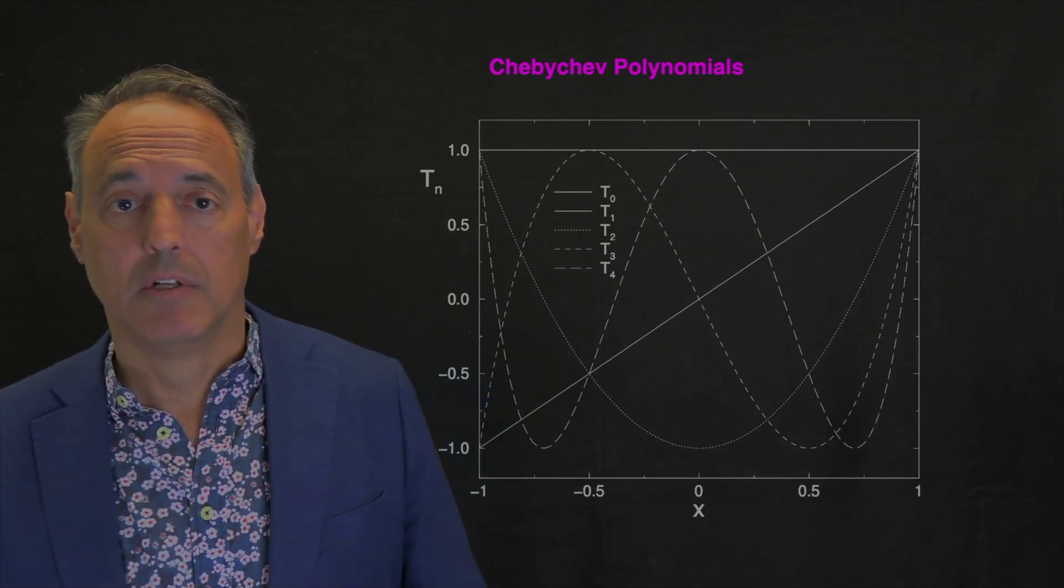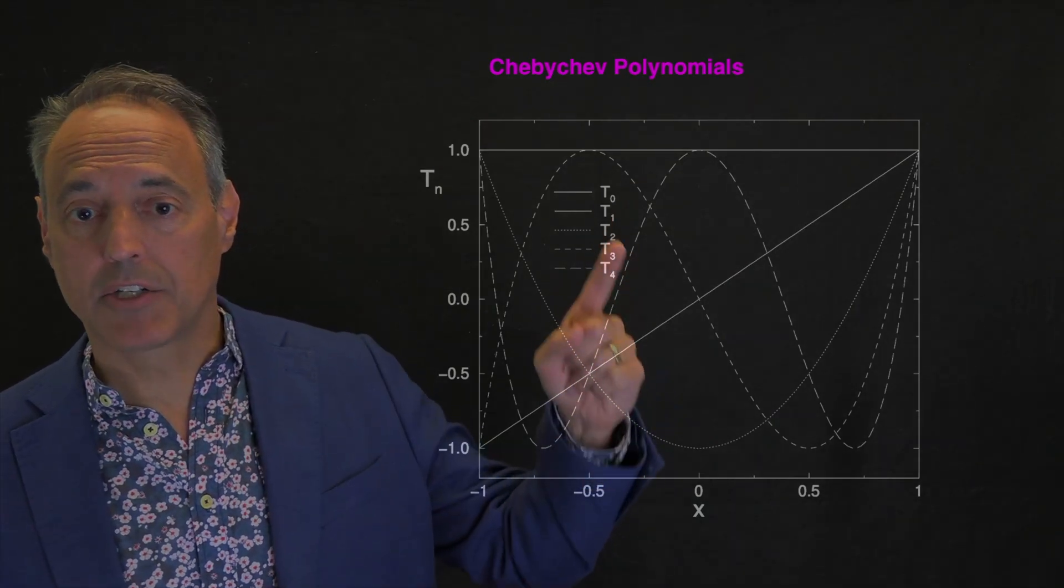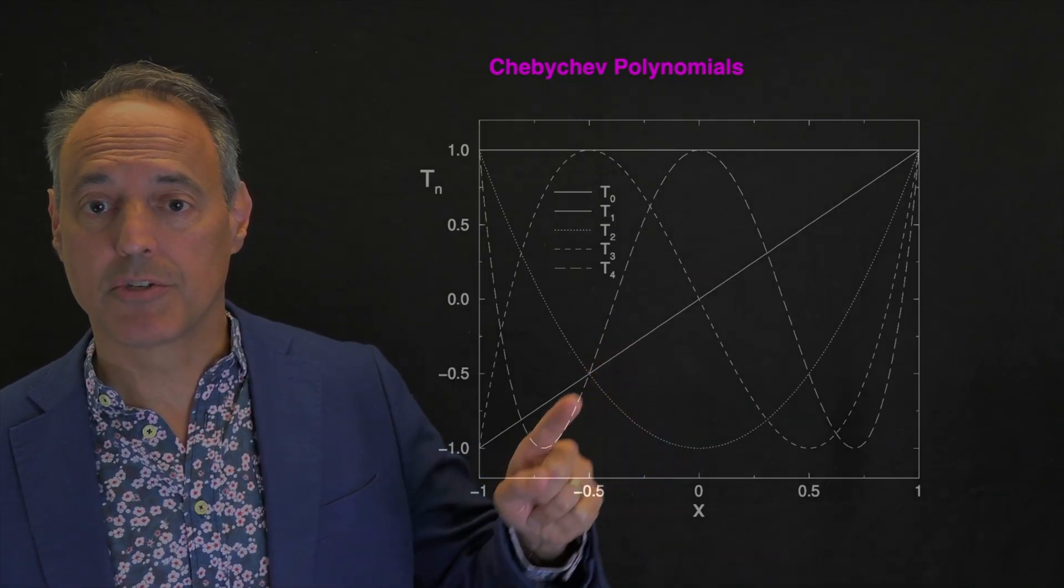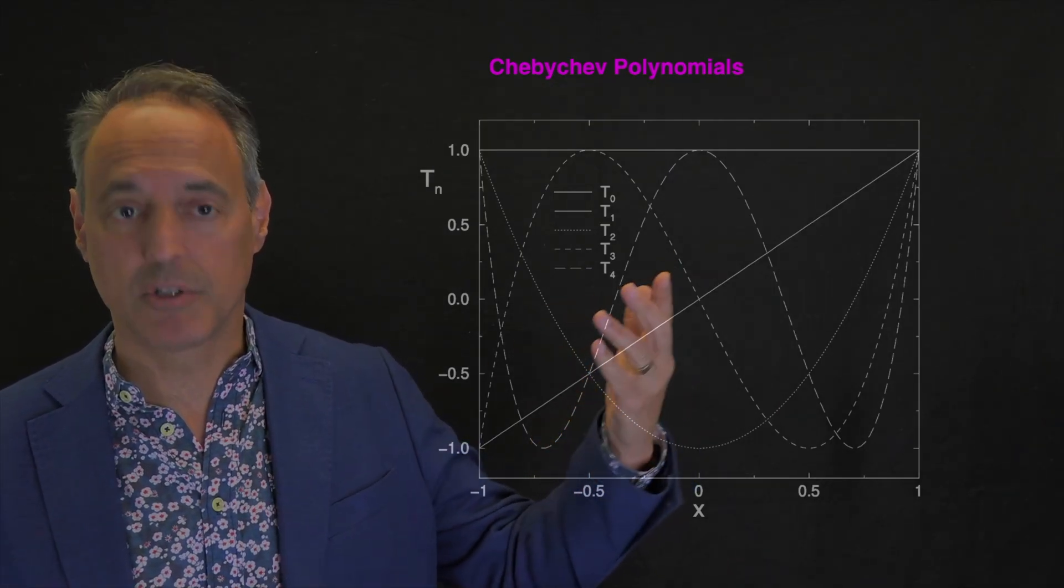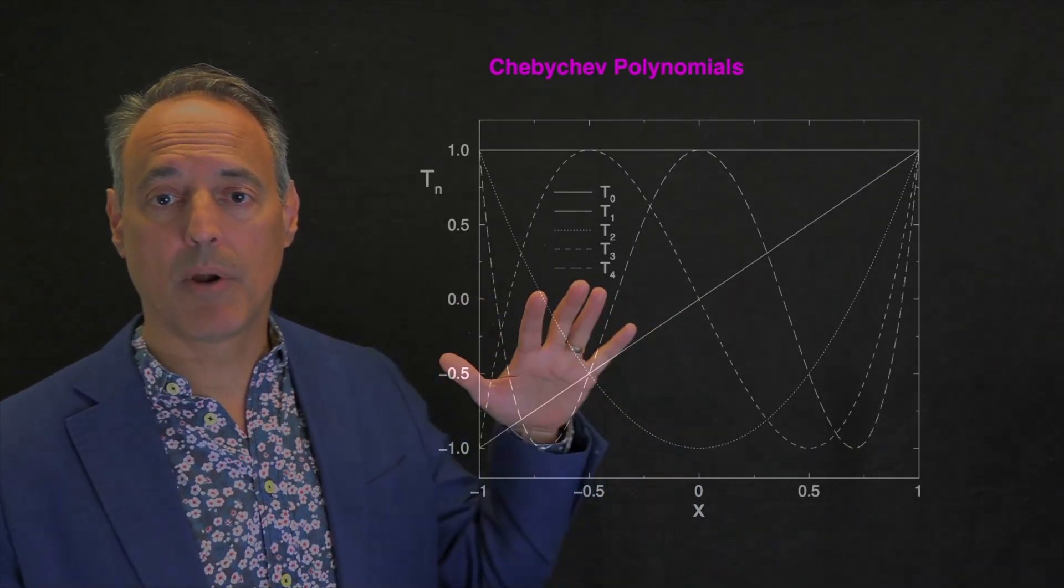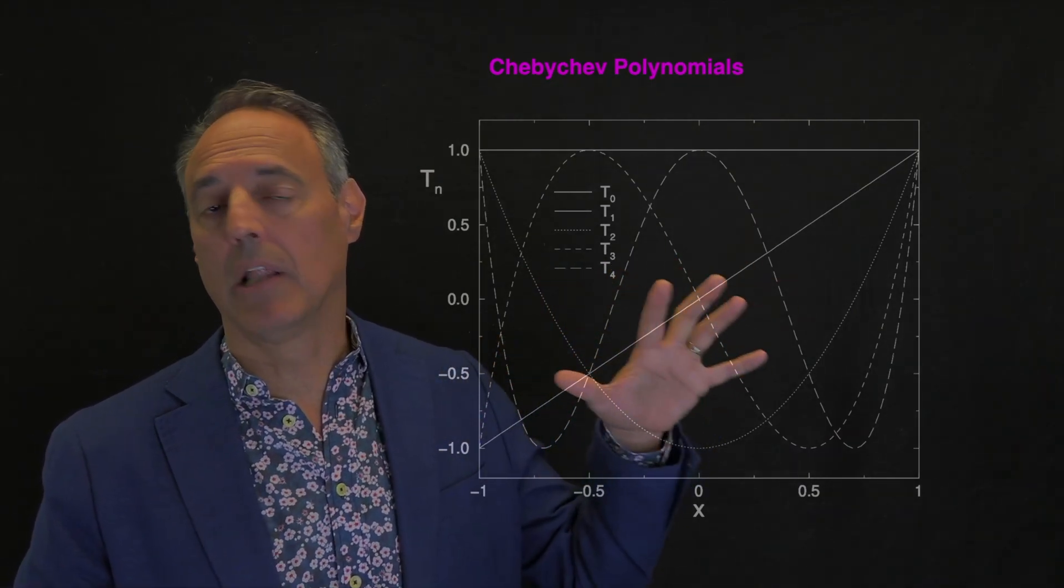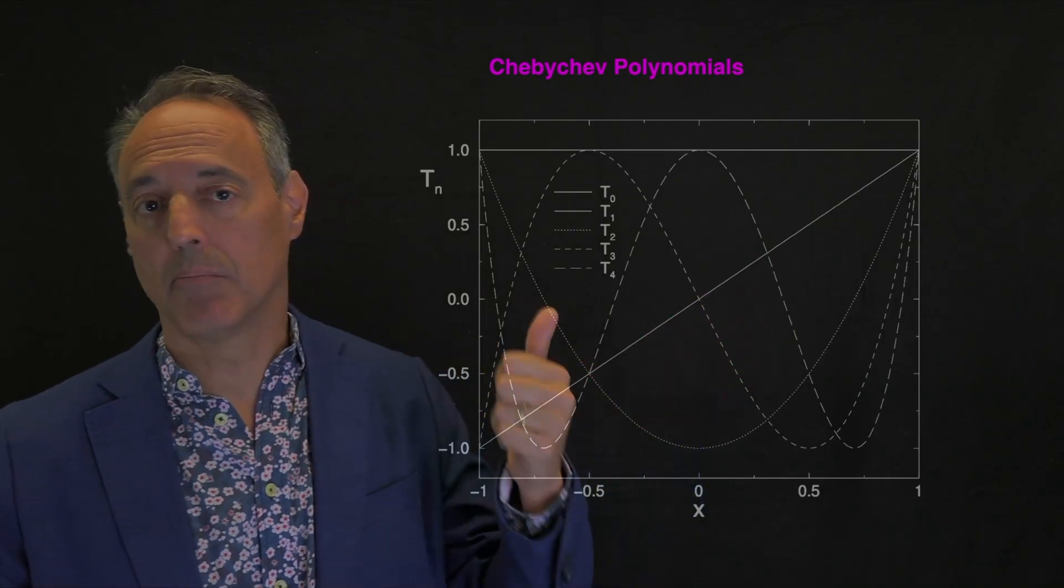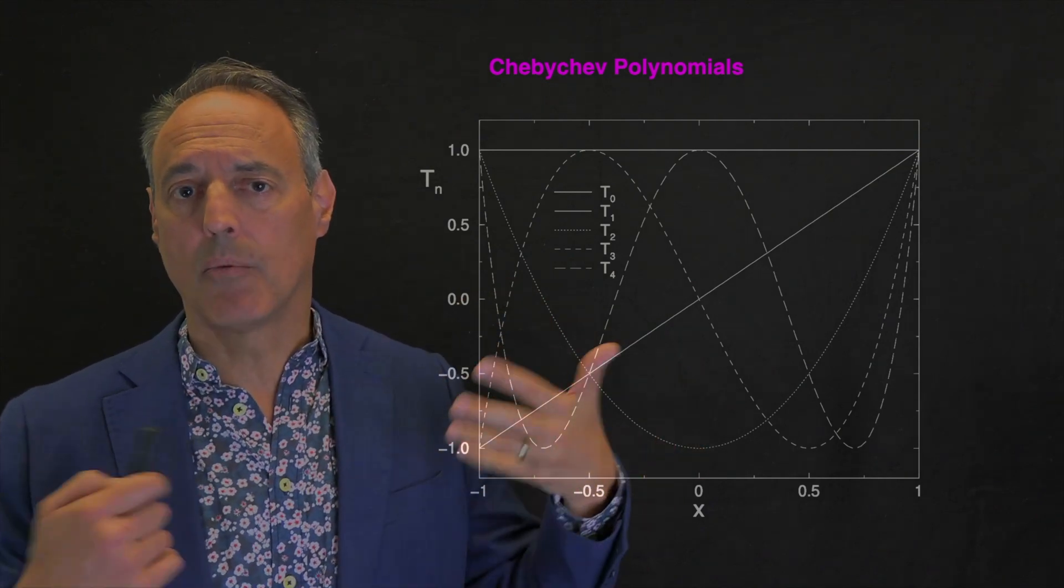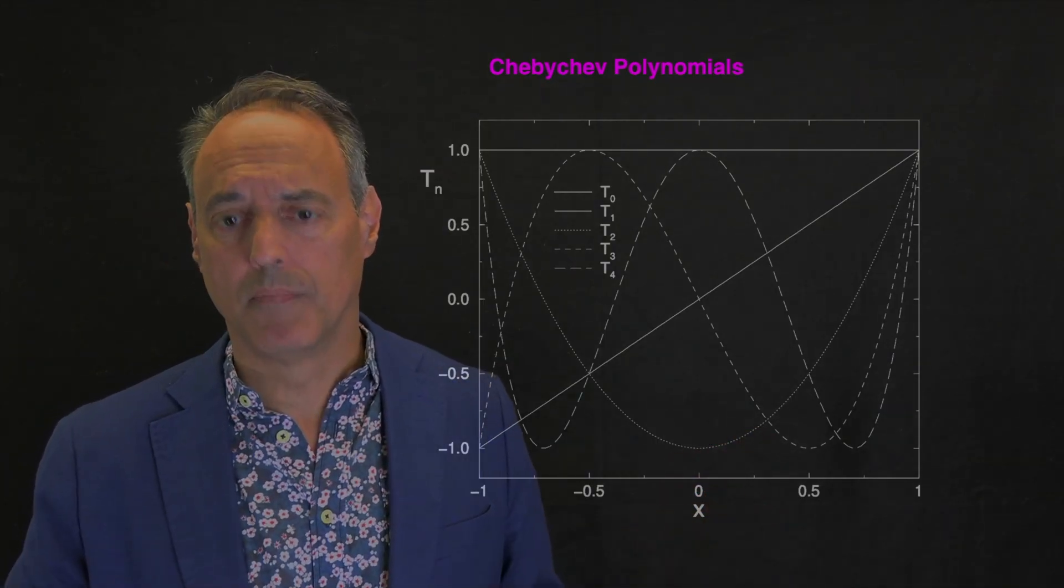Here's what these Chebyshev polynomials look like. T_0 is a constant, T_1 is this line, T_2 is this parabola, T_3 is cubic, T_4 and so forth. You're representing your solution as a sum of these polynomials constructed to have a complete basis. They're orthogonal, giving you all the nice Sturm-Liouville properties and a representation guaranteed to converge to any function in domain negative one to one.